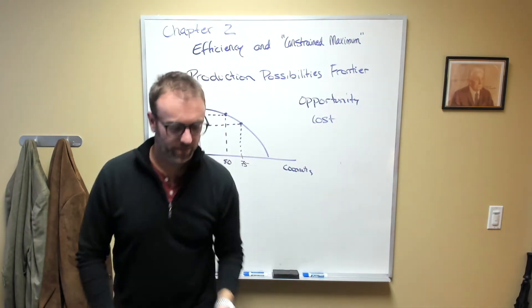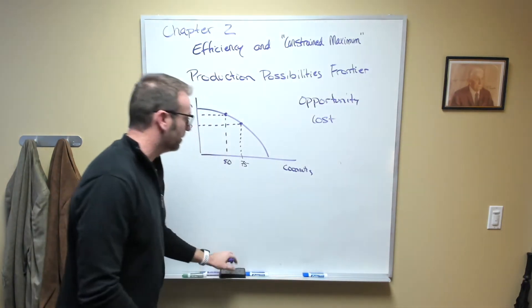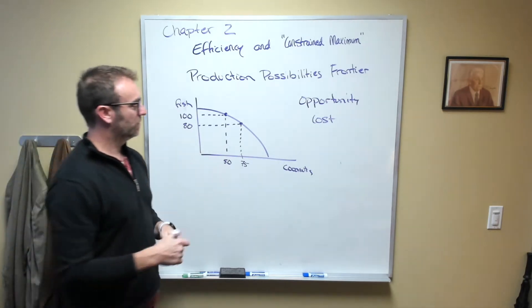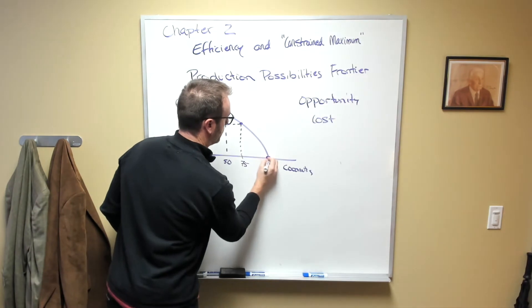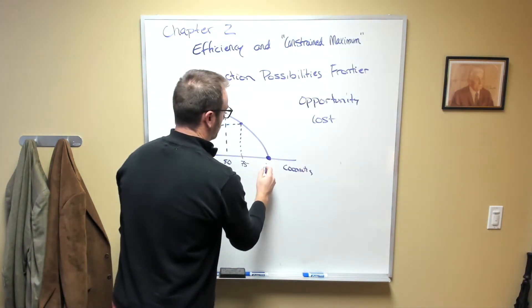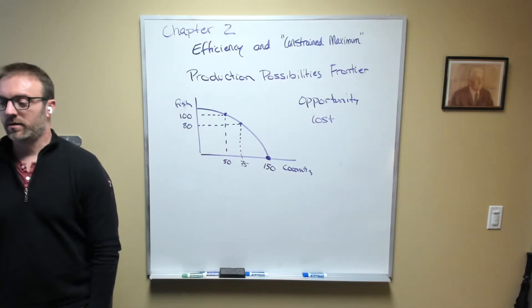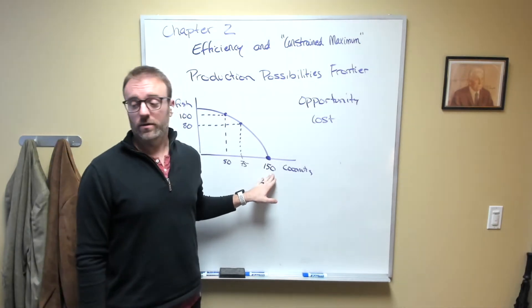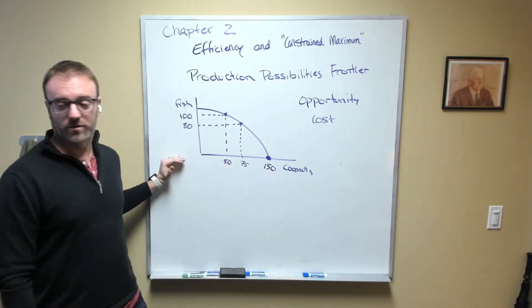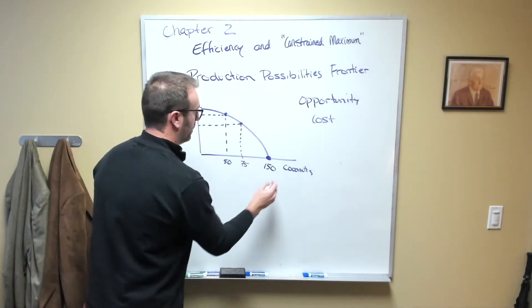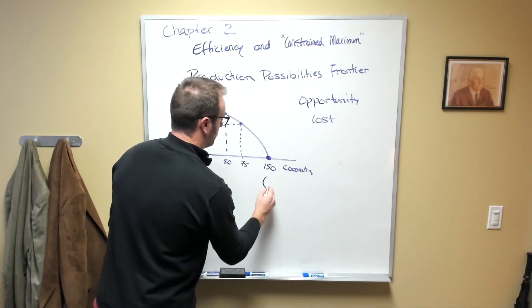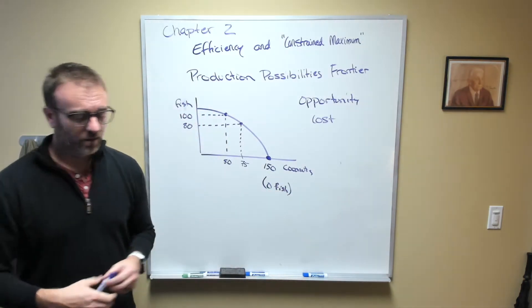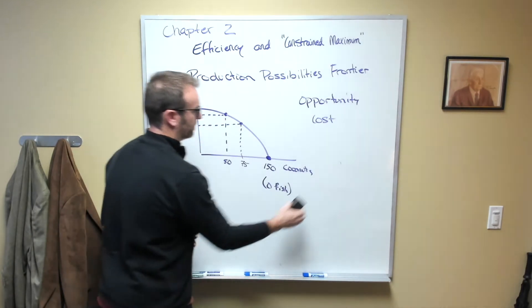In this framework, we could maximize the amount of coconuts that we produce. That would be really easy - we just spend all of our time harvesting coconuts and let's say we get something like 150 coconuts. If we maximize the amount of coconuts that we have, we would do that by producing or catching zero fish. So we could have 150 coconuts but that means zero fish.